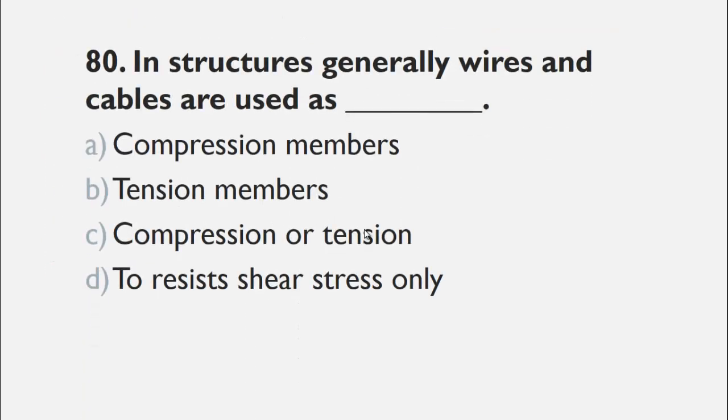MCQs number 80 is, in structures, generally wires and cables are used as a compression member, b tension member, c compression or tension member, d to resist shear stress only. Cable and wires can only withstand tension forces, they cannot withstand compression forces. So, the right choice for this question is b tension members.